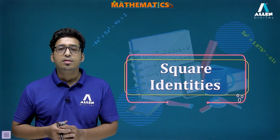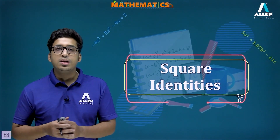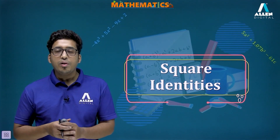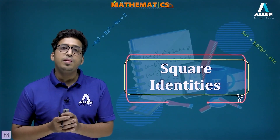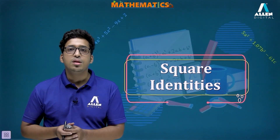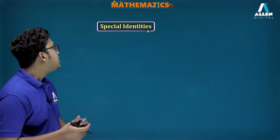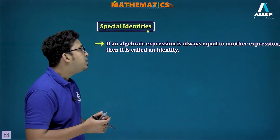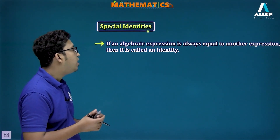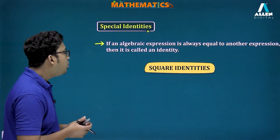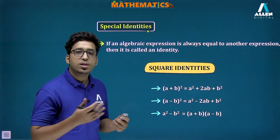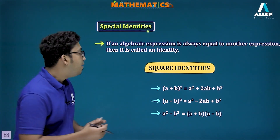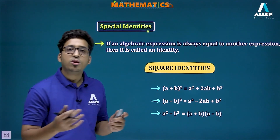Hello and welcome students. In this lecture we are going to discuss square identities based on the chapter algebra, and solve a few very good questions previously asked in competitive level exams. First, an algebraic expression that is always equal to another expression is called an identity. We already know these square identities: (a+b)², (a-b)², and a²-b², and we should memorize them for smooth calculations.